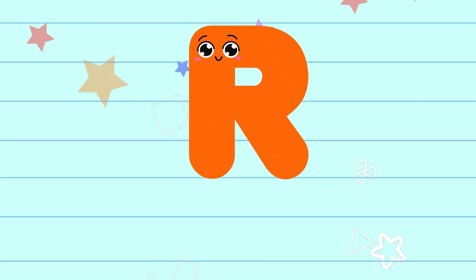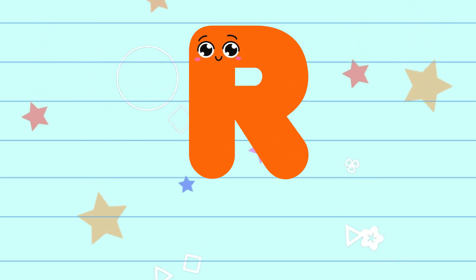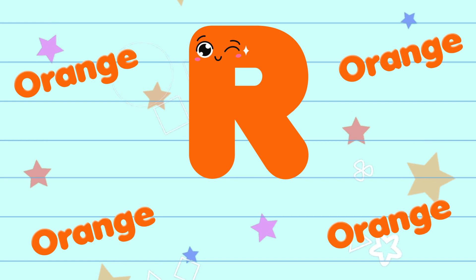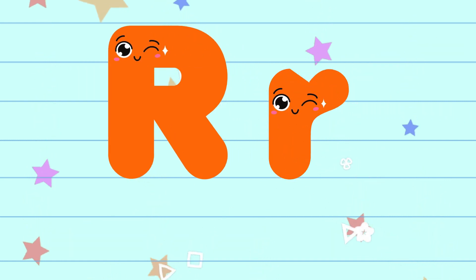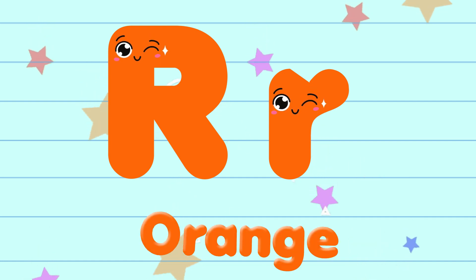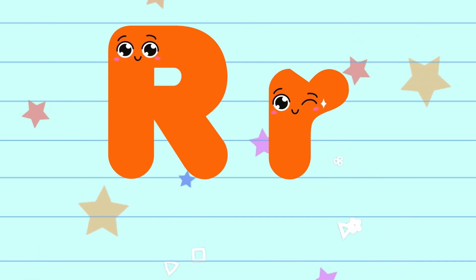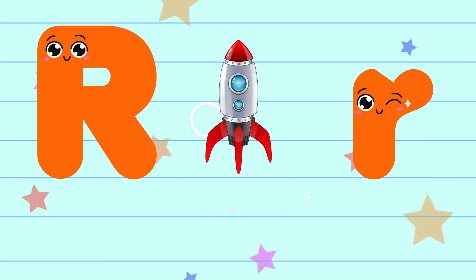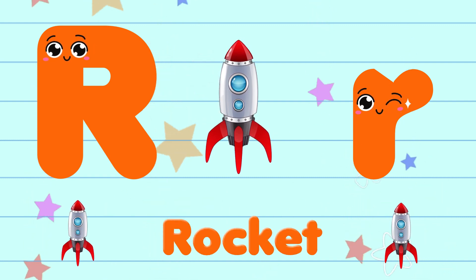R. The color of the letter R is orange. The sound of the letter R is r. R is for rocket.